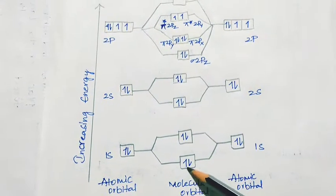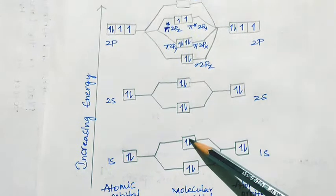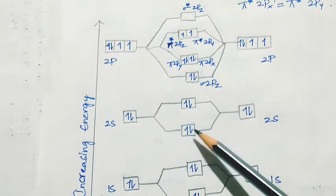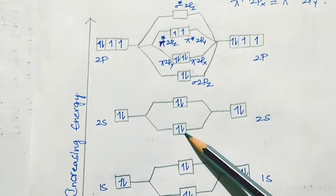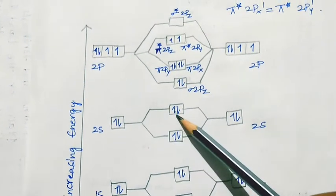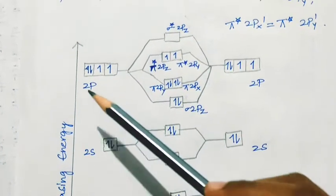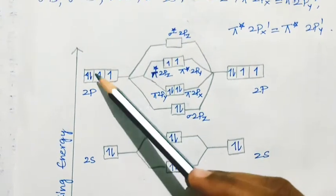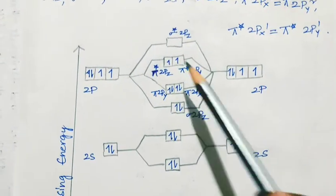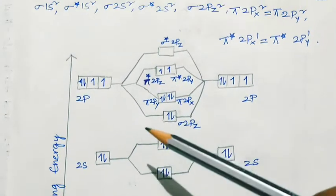At the 1s level, 2 electrons are filled in the bonding orbital and 2 in the anti-bonding molecular orbital. At the 2s level similarly, 2 electrons are filled in the bonding orbital and 2 in the anti-bonding molecular orbital. Next comes the 2p level, where there are 4 electrons on each side — totally 8 electrons to be filled.